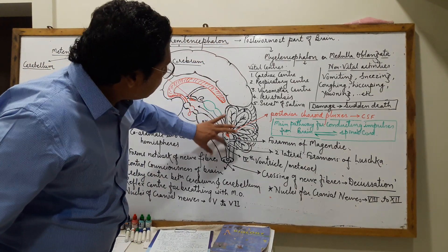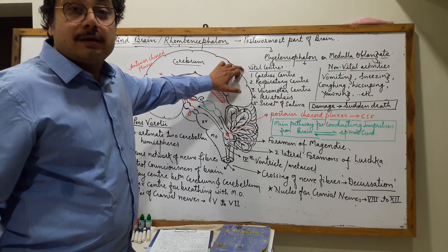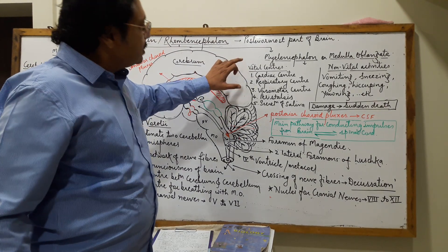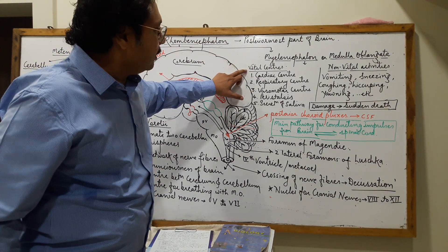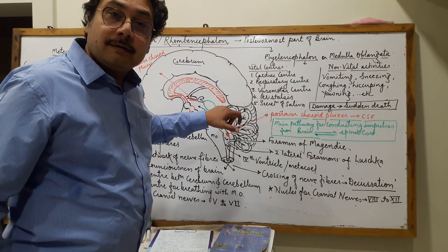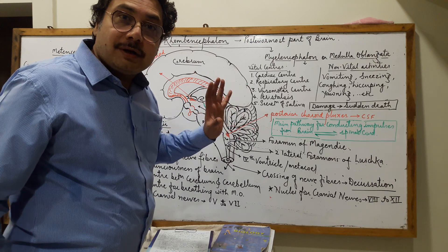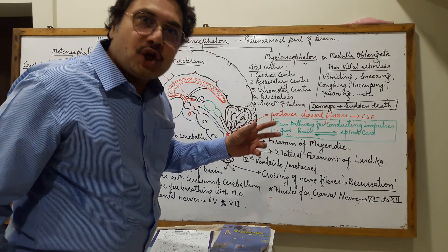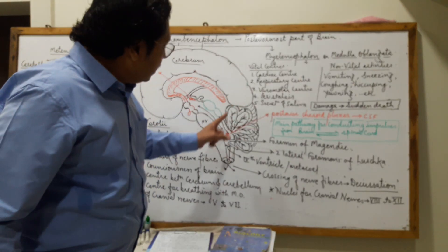The medulla oblongata has vital centers which are essential for life. Such vital centers include the cardiac center, where heartbeat initiation and regulation of the heartbeat are completely controlled.